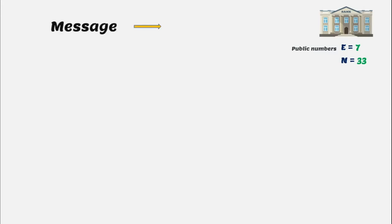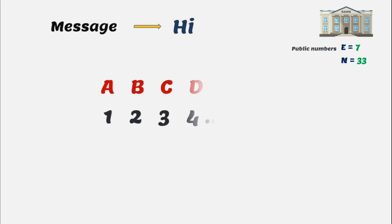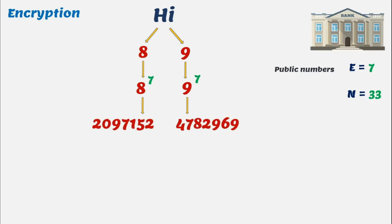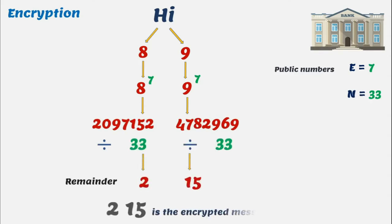We can send any message to the bank. For this example, let's send the message 'Hi'. The first thing we do is convert this message into a number. That is simple: A is 1, B is 2, C is 3, and so on. So H becomes 8 and I becomes 9. Now we turn these numbers into code by using the public number E, which is 7. We do this by raising the number to the power of 7. So we calculate 8 and 9 raised to the power 7 and get a huge number. For the final step, we use the second public number N, that is 33, divide the result by 33, and note down the remainder. And that is the encrypted version of the message 'Hi'. Please note: we take the remainder, not the quotient.